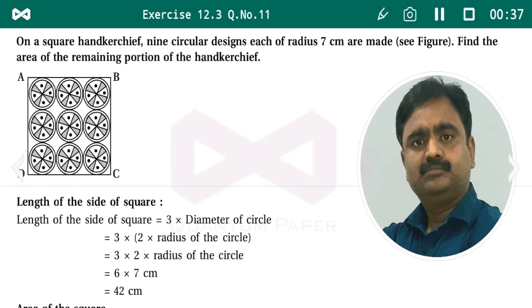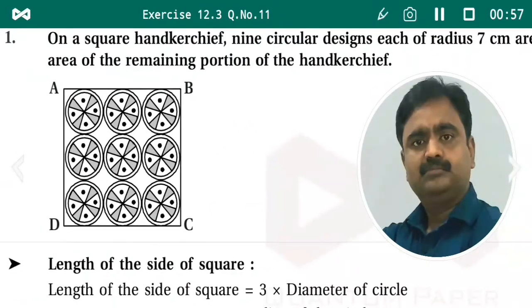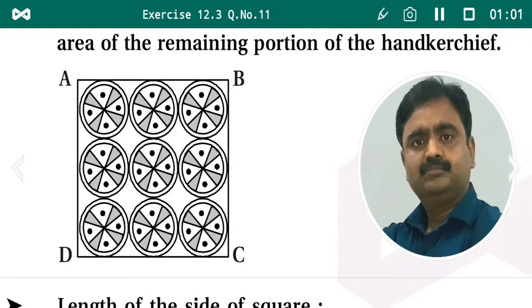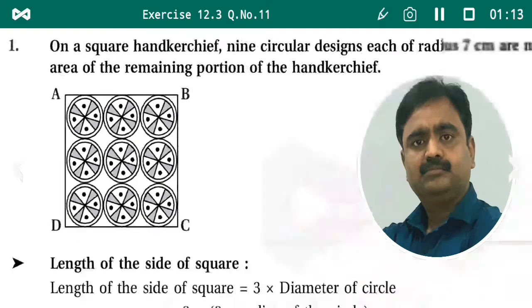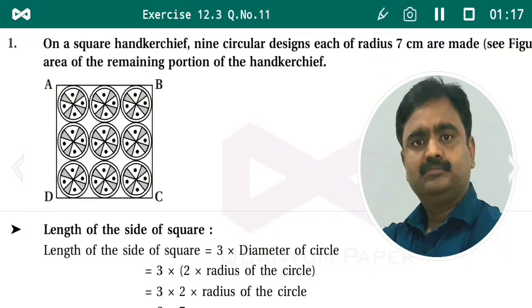In question number 11, it is given that on a square handkerchief, nine circular designs each of radius 7 centimeter are made as in the figure. We need to find the area of the remaining portion of the handkerchief. So in square ABCD, nine congruent circles are drawn with the same radius of 7 centimeter, and we have to exclude the area of these nine circles.